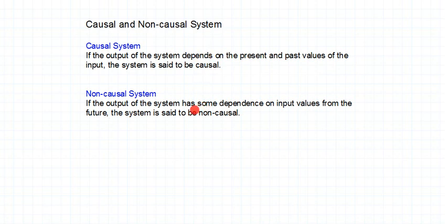How would you understand causality and non-causal systems? Causal systems must not contain any future input. A causal system must only contain present and past values. The moment there is a future input dependence in the output of the system, the system becomes non-causal. If there is no future term involved in the output, the system becomes causal.